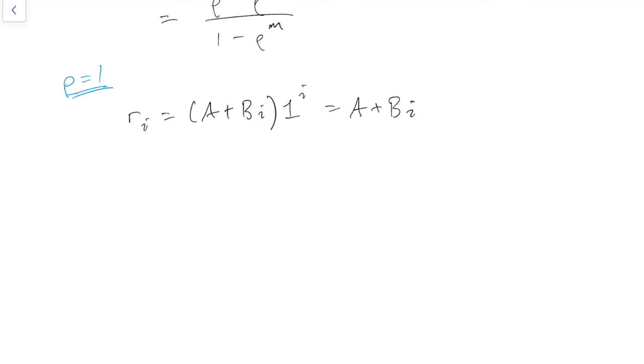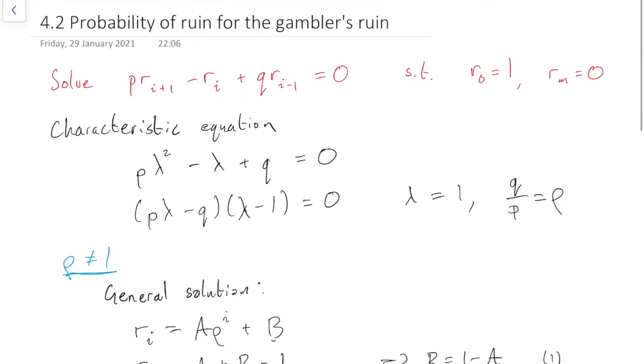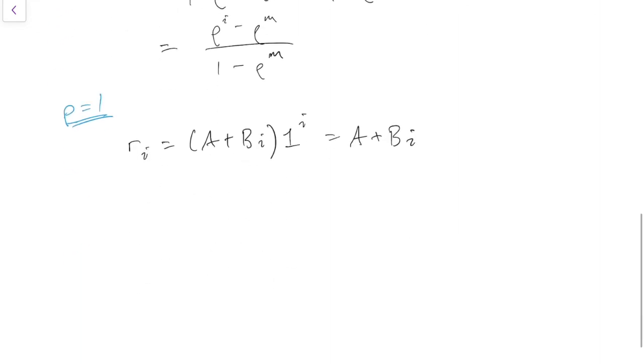And so again, we need to use our two boundary conditions, r0 equals 1 and rm equals 0 from the beginning. So that was the general solution just there. Using boundary conditions, we have r0, which is going to be a plus b lots of 0. So that's just a equals 1, so that gives us a straight away.